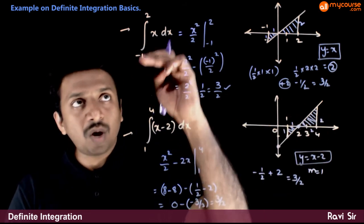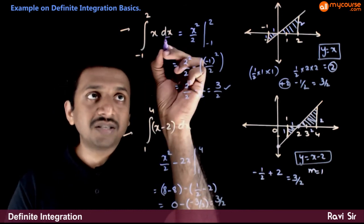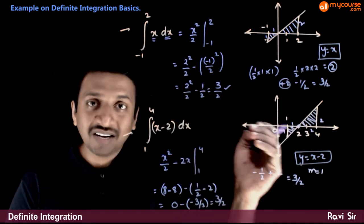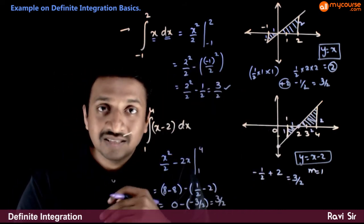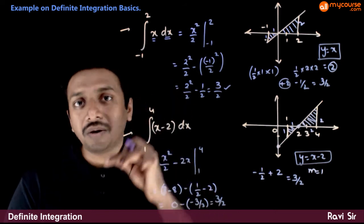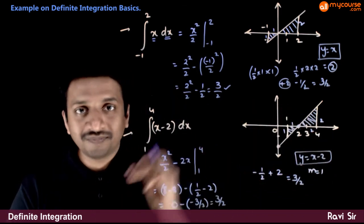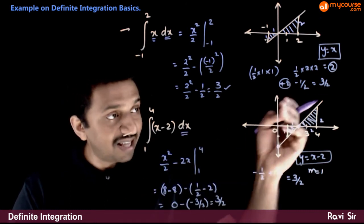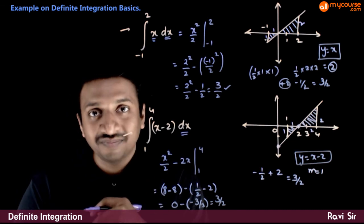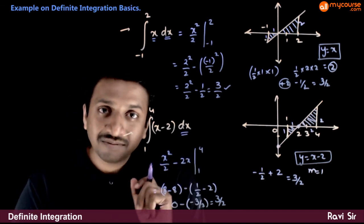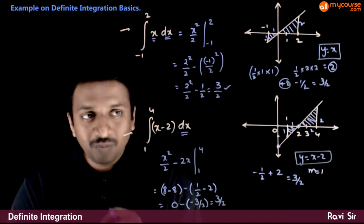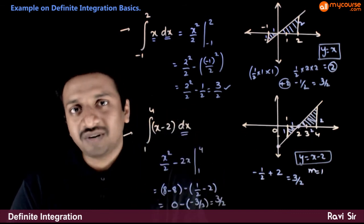If the limits are going from a smaller number to a bigger number, dx is positive. Hence, if the curve is below the x-axis, the area is negative; above the x-axis, the area is positive. Sometimes the limits might go from a higher number to a lower number — for example, 4 to 1 — in that case dx will be negative, so areas below the x-axis are positive and areas above the x-axis are negative. We will learn that later. When limits go from a smaller to a bigger number, integration represents the algebraic sum of areas.